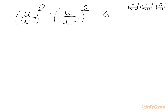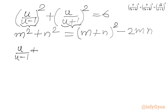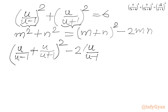Now we will use the algebraic identity m² + n² = (m+n)² − 2mn. Let m = u/(u−1) and n = u/(u+1). Then we write [u/(u−1) + u/(u+1)]² minus 2 times [u/(u−1)][u/(u+1)] equal to 6.